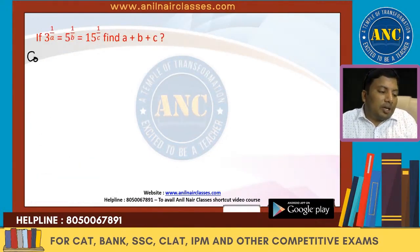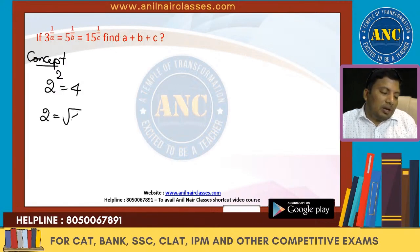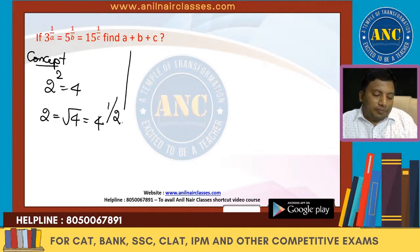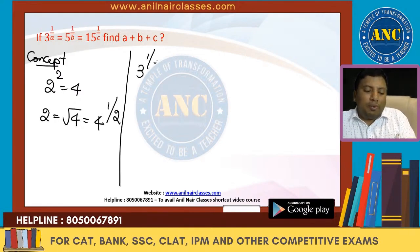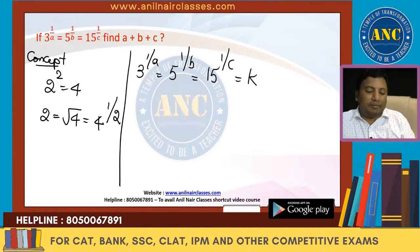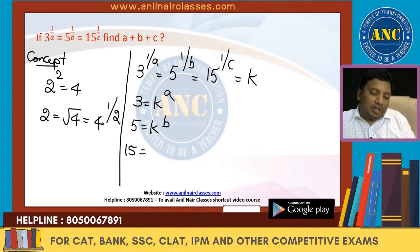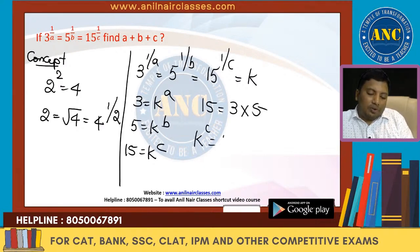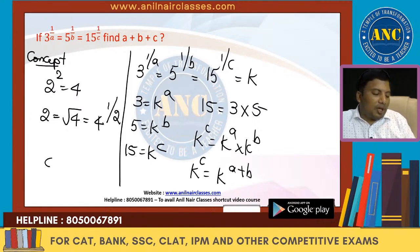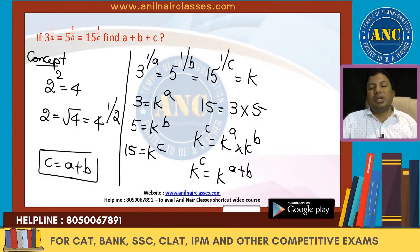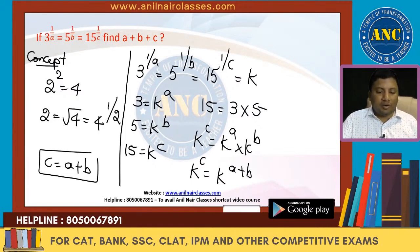Next concept: 2² = 4, so 2 = 4^(1/2). Similarly, if 3^(1/A) = 5^(1/B) = 15^(1/C) = K, then 3 = K^A, 5 = K^B, 15 = K^C. Since 15 = 3 × 5, we get K^C = K^A × K^B = K^(A+B), therefore C = A + B.